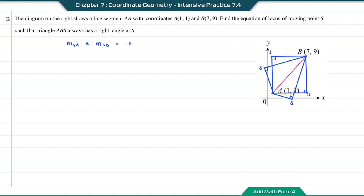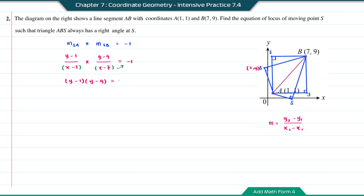We're going to find the equation through this information. We let the coordinates of the moving point S as (X, Y). To find the gradient SA, it will be (Y minus 1) over (X minus 1). And the gradient SB will be (Y minus 9) over (X minus 7). So the product equals negative 1. Moving (X minus 1) times (X minus 7) to the right hand side, this gives (Y minus 1)(Y minus 9) equals negative 1 times (X minus 1)(X minus 7). Expanding gives Y squared minus 10Y plus 9 equals X squared minus 8X plus 7.